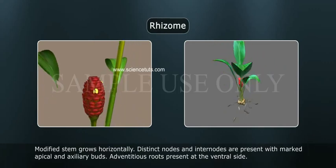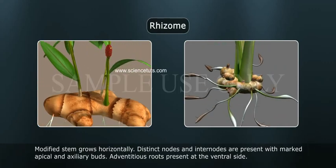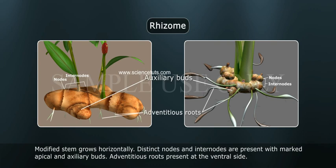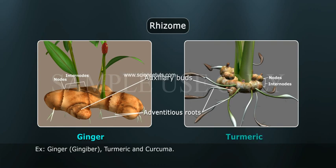Rhizome: a modified stem that grows horizontally. Distinct nodes and internodes are present with marked apical and axillary buds. Adventitious roots are present at the ventral side. Examples include ginger and turmeric (Curcuma).